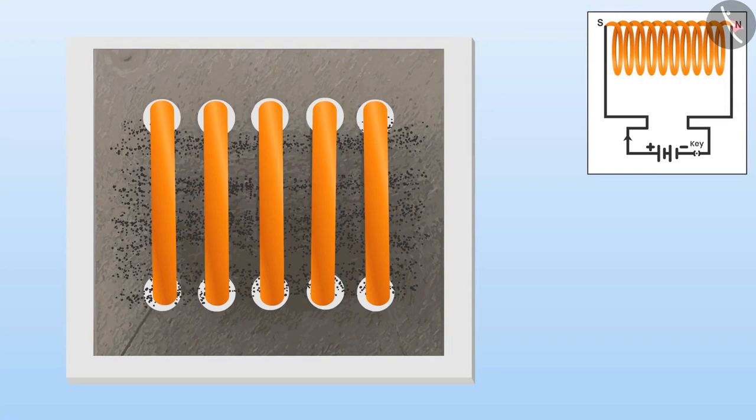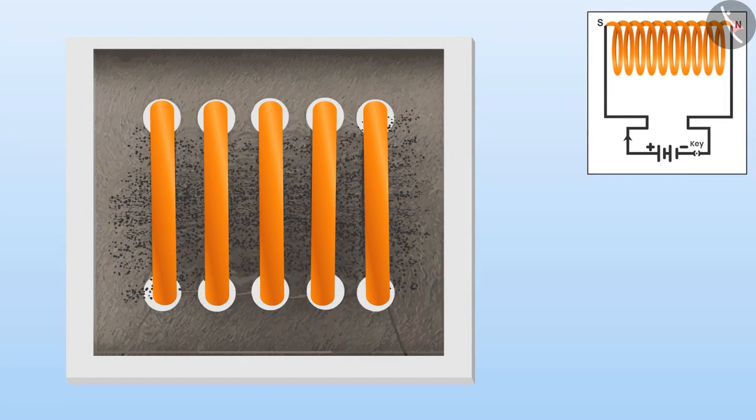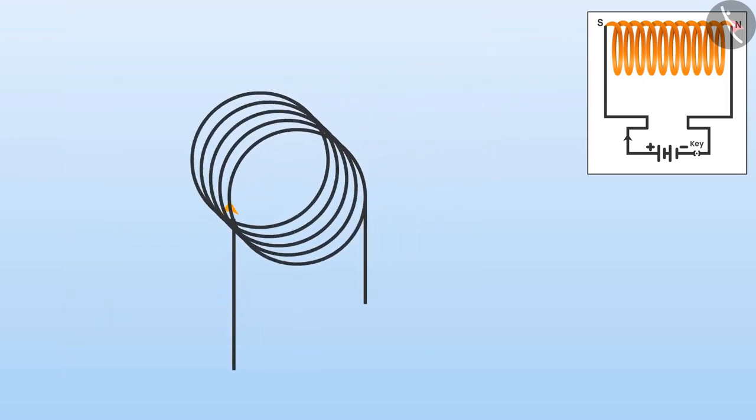If we apply the current through the solenoid, then iron filings will make the pattern here too. That means there are magnetic fields too. To find the direction of the field lines, we will look at the direction of current at both sides. On one side, the current is flowing in clockwise direction. That means this will be the south pole of the solenoid based on the rule we learnt before.